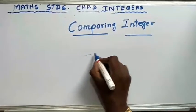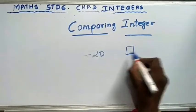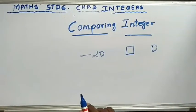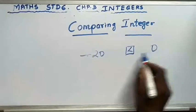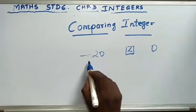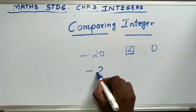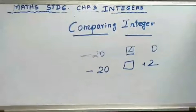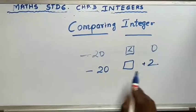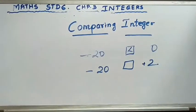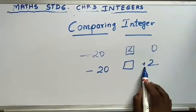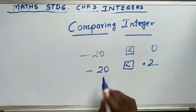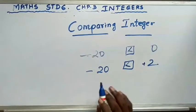Let's do sums. Minus 20 or 0 — which is greater? 0 is greater, because below 0 comes minus 1, minus 2, minus 3 and so on down to minus 20. Now minus 20 and 2: which is greater? Always positive is greater, negative is smaller. So 2 is greater, and minus 20 is smaller.